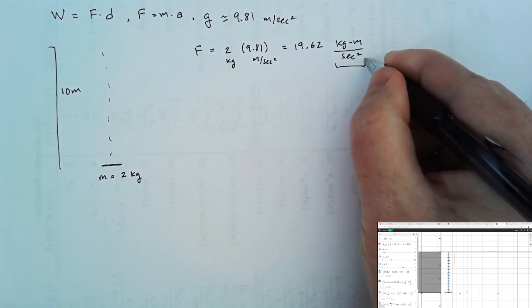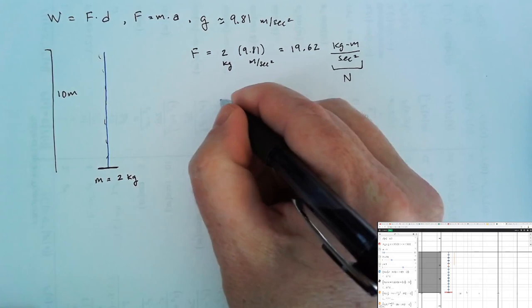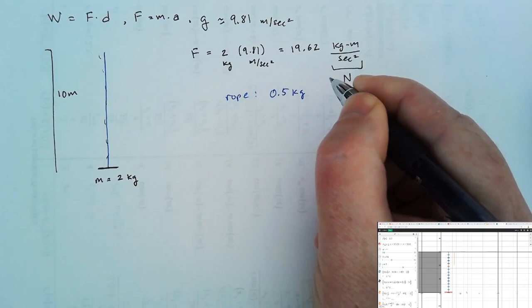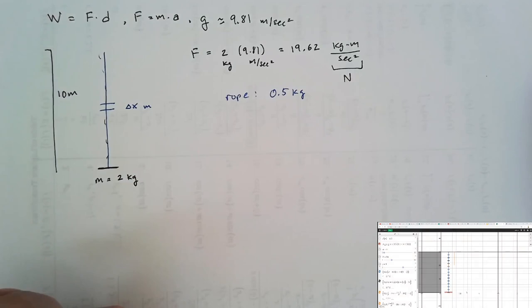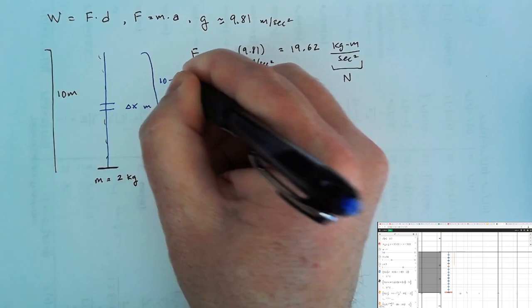What about the rope? Let's say the rope has a total mass of 0.5 kilograms. If we take a small slice of the rope that is delta x meters tall, and this distance that that piece of the rope must move is 10 minus x meters from the top of the building, then as before,